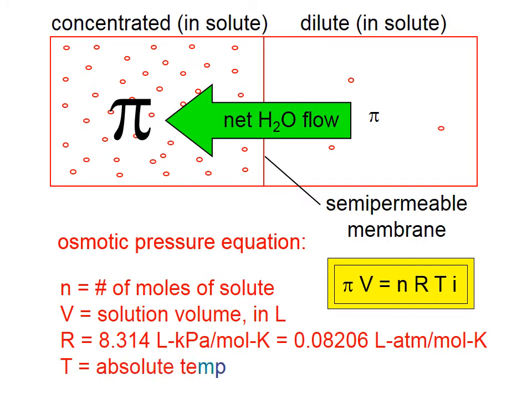Where n is the number of moles of solute, V is the solution volume in liters, R is the universal gas constant, which typically has the values 8.314 liter kilopascals per mole kelvin, or 0.08206 liter atmospheres per mole kelvin.